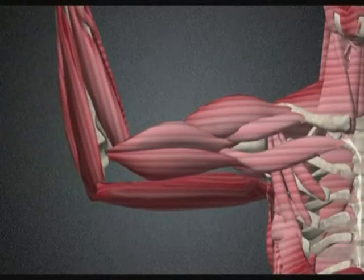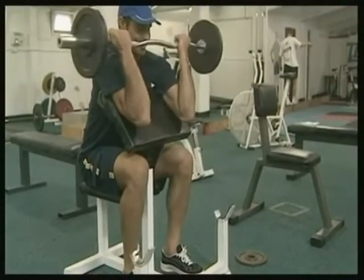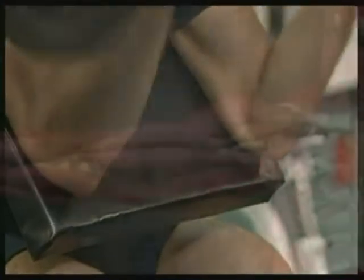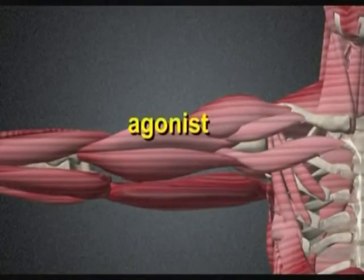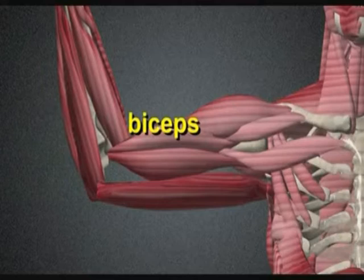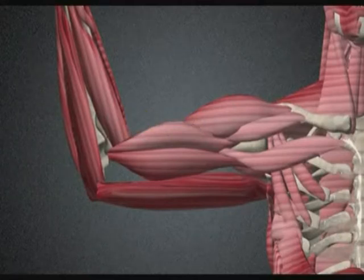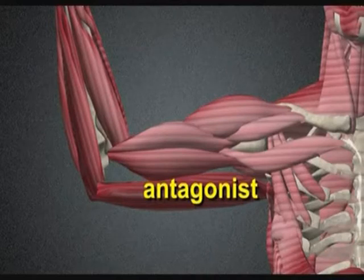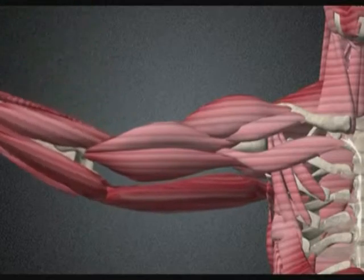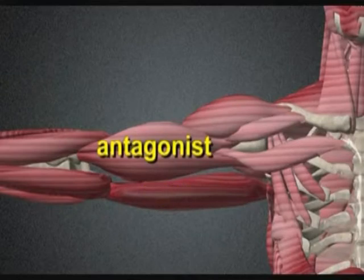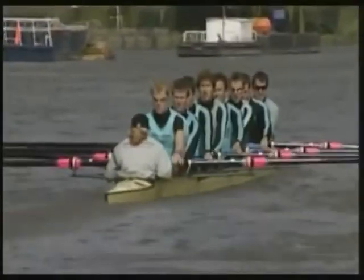Once flexed, a limb would remain flexed unless an opposing force was applied. The force that produces extension is supplied by another muscle pulling on the other side of the bone through a separate leverage system. The muscle that directly causes movement through contraction is called the agonist. In the flexion of the arm, the agonist is the biceps, which shortens. For arm flexion to occur, the triceps must lengthen — this is the antagonist. When the arm is extended, the roles are reversed: the triceps is the agonist and the biceps is the antagonist.